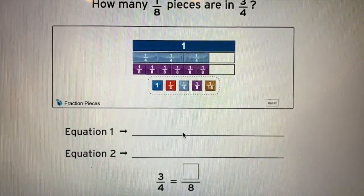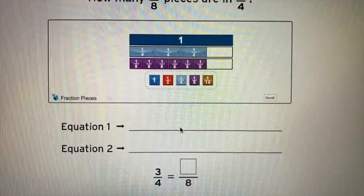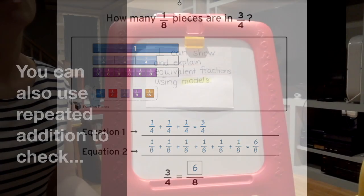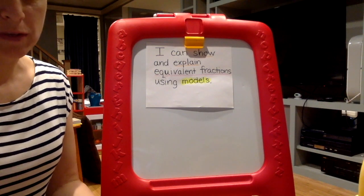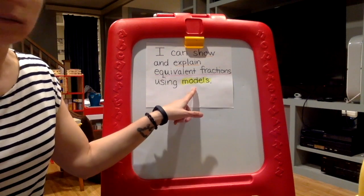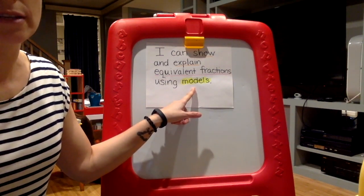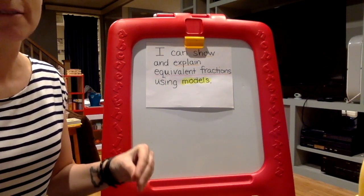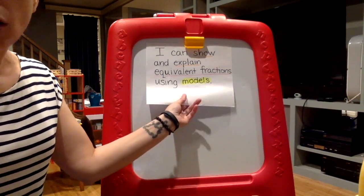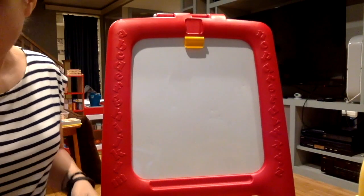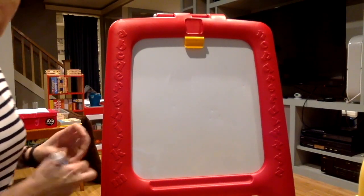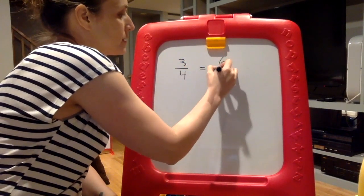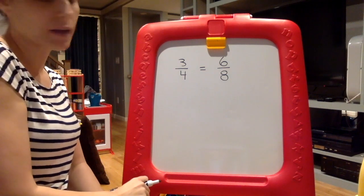I can check that equivalency using a multiplication equation. So how do we check to make sure that those pieces are equivalent? We used our model. Our model showed us that three fourths and six eighths occupied the same amount of space, meaning they had the same value. But how do we make sure that those are in fact equivalent fractions? There's a quick way for us to check.